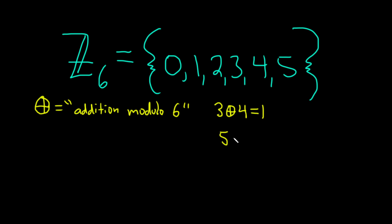How about 5 circle plus 4, that's going to be 9, that's the same thing as 3, right? Because 6 goes into 9 one time and so the answer is 3.